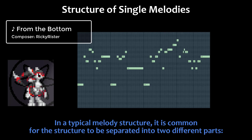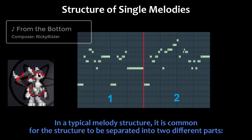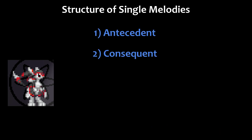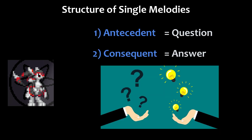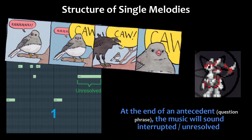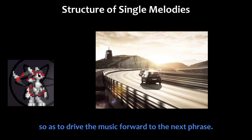In a typical melody structure, it is common for the structure to be separated into two different parts: antecedent and consequent, or question and answer. At the end of an antecedent, the music will sound interrupted or unresolved, so as to drive the music forward to the next phrase.